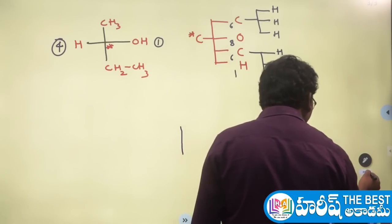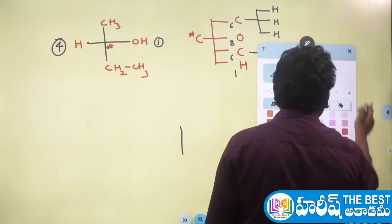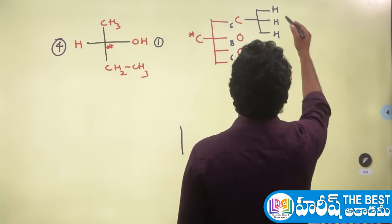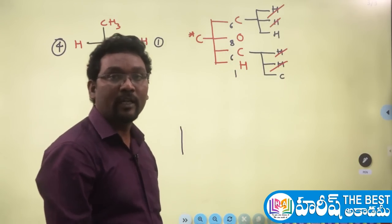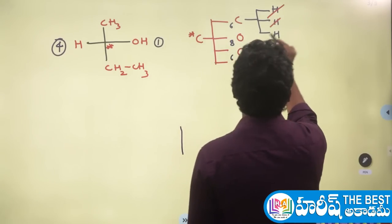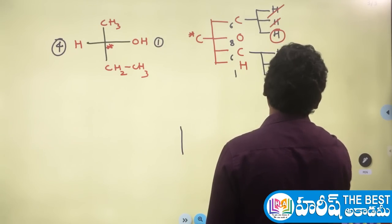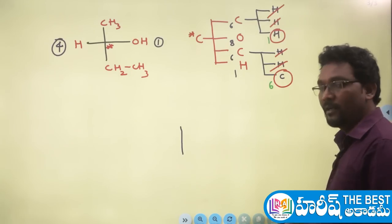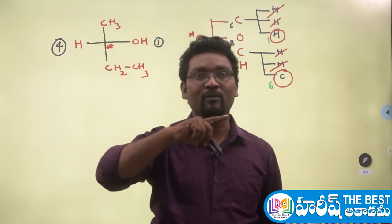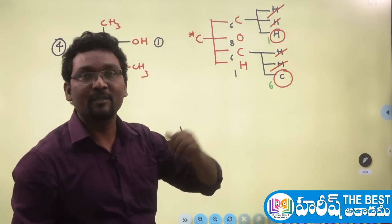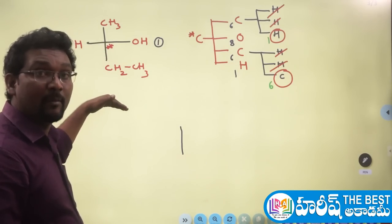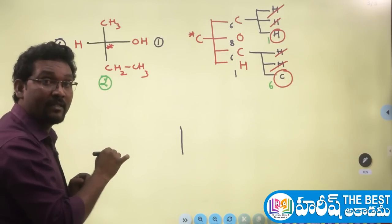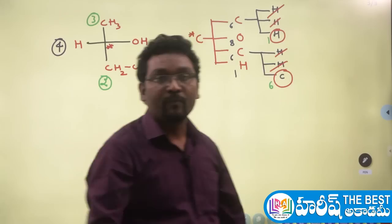After cancelling the same atoms, check atomic numbers of the remaining different atoms. Hydrogen has atomic number 1, carbon has atomic number 6. Carbon's atomic number is higher, so the carbon-containing group (CH₂CH₃) gets the 2nd priority, and the methyl group (CH₃) gets the 3rd priority. Priority assignment is now complete.